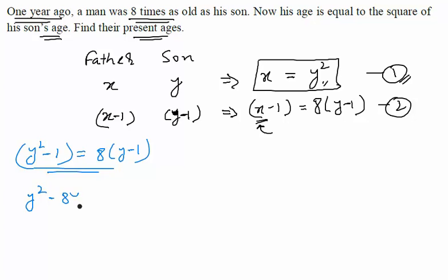y² - 8y + 7 = 0. Let us try to split and factorize this term. You will get (y - 7)(y - 1) = 0. This will give you y = 7 or y = 1.